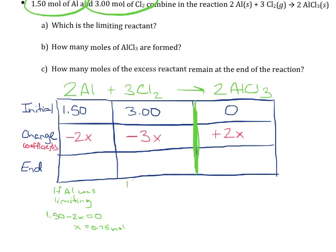Let's do the same thing for the chlorine. If chlorine was limiting, then 3.00 minus 3x equals 0. So the amount I start with minus the change is going to give me 0 because that's what it would mean to be a limiting reactant is that I have 0 left at the end. If I do that math, that would mean that x is equal to 1 mole. Now both of these things can't be true. x cannot be equal to two different values. So which one is it? Is x equal to 0.75 mole or is x equal to 1 mole?